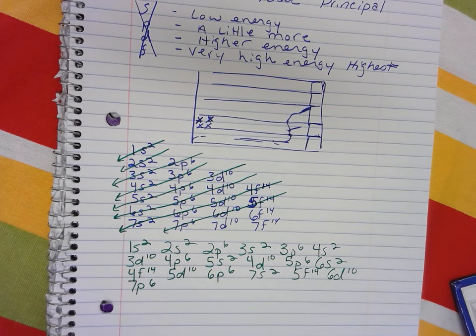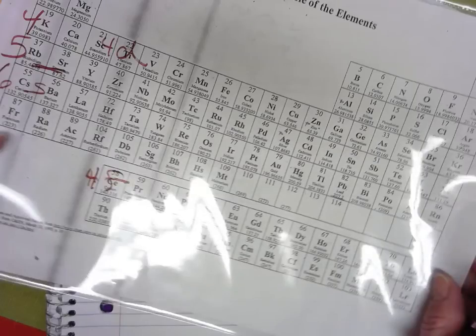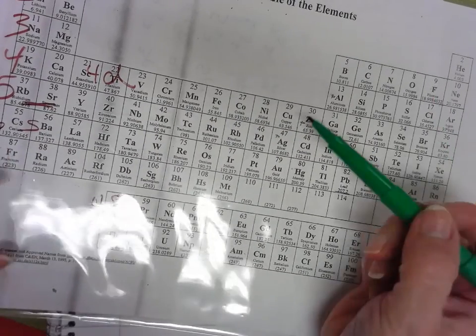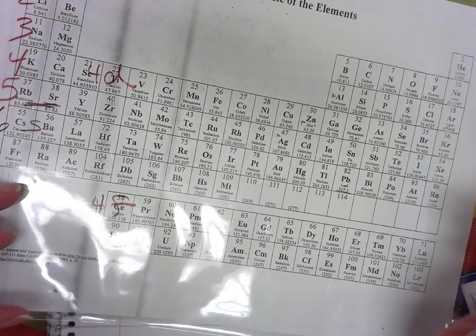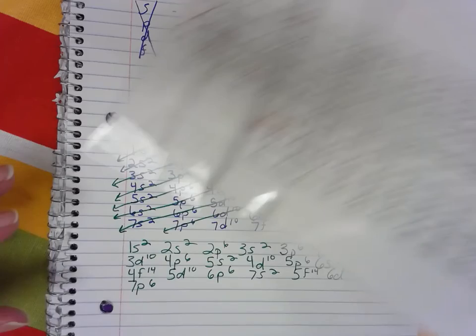Now, if you want to write the electron configuration for something, let's just take a neutral atom of this palladium here with 46 electrons. All you have to do is count.